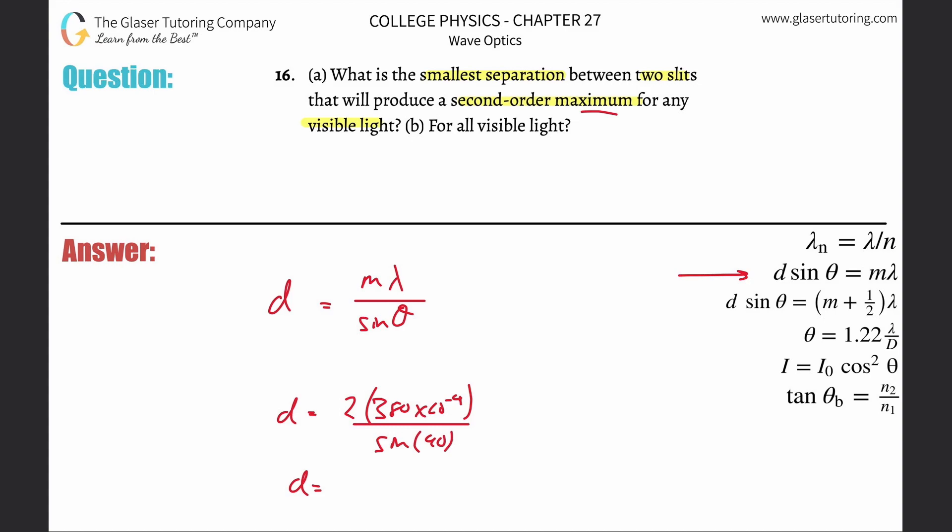So we can simply calculate that. It's going to be 380 times 10 to the minus 9 multiplied by 2, and that's 7.60 times 10 to the minus 7th meters. If you wanted it in nanometers, that would be 760 nanometers.